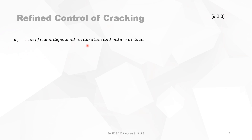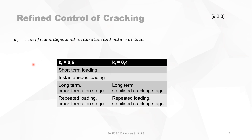KT is a coefficient dependent on duration and nature of load. KT equals 0.6 for short-term and instantaneous loading. It can also apply to long-term loading in the crack formation stage, and for repeated loading also in the crack formation stage. KT equals 0.4 in the long term but in the stabilized cracking stage, and also for repeated loading in the stabilized cracking stage. The distinction between crack formation and stabilized cracking stages can be confusing.